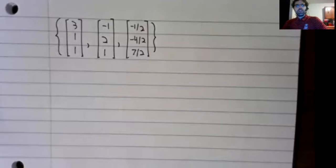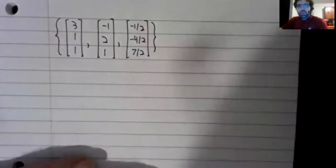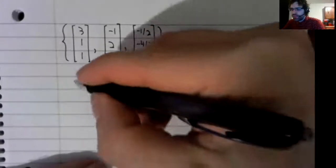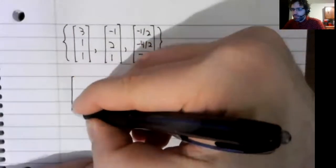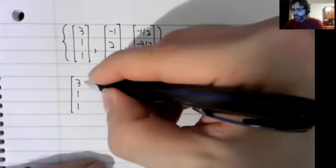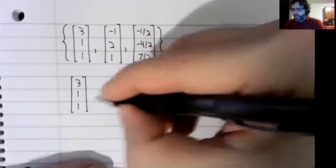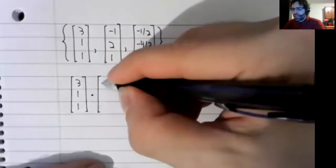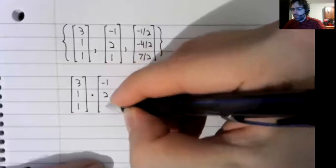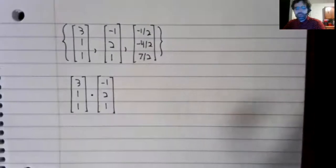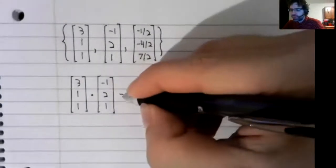To be orthogonal, all of the dot products must be zero. There are three of them. I might not write all of them out, we'll see.